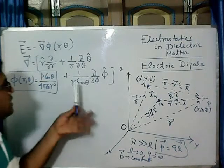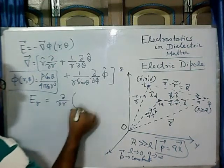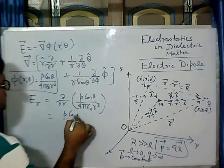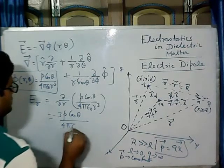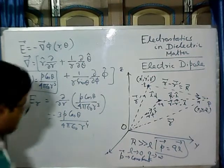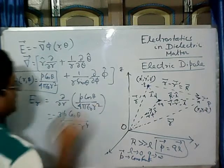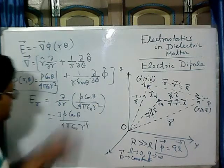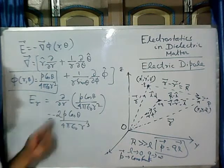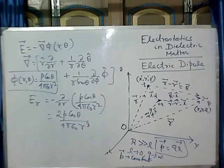So the phi term will not contribute anything to the expression of the electric field. For the R-th component of electric field, we operate del/del R on phi. It becomes P cos theta times minus 2, and the R cancels giving R squared, so we get 2 P cos theta, and with the minus sign from E = -grad phi it becomes positive. So E_R is positive.